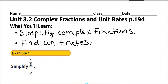Remember, unit rate just means one of something, which we practiced in the last lesson. Let's take a look at the first example. To simplify, you read this as 1 third divided by 1 half.